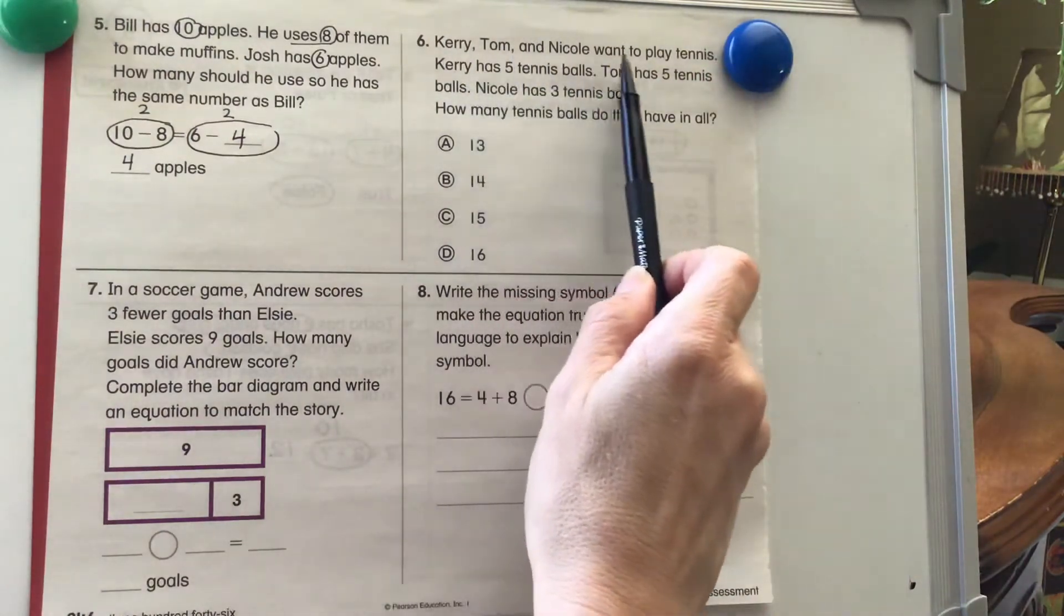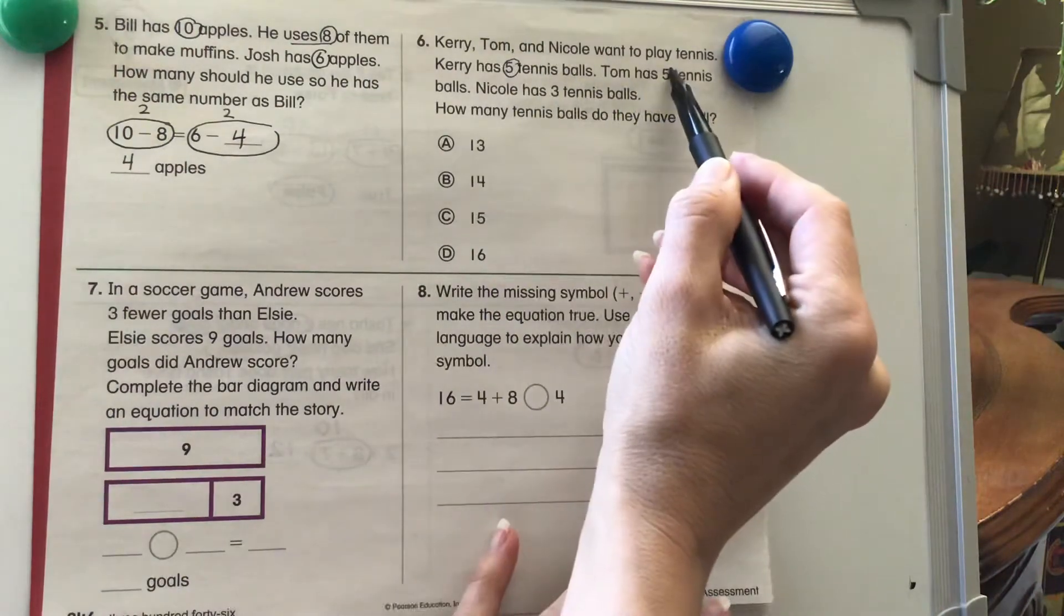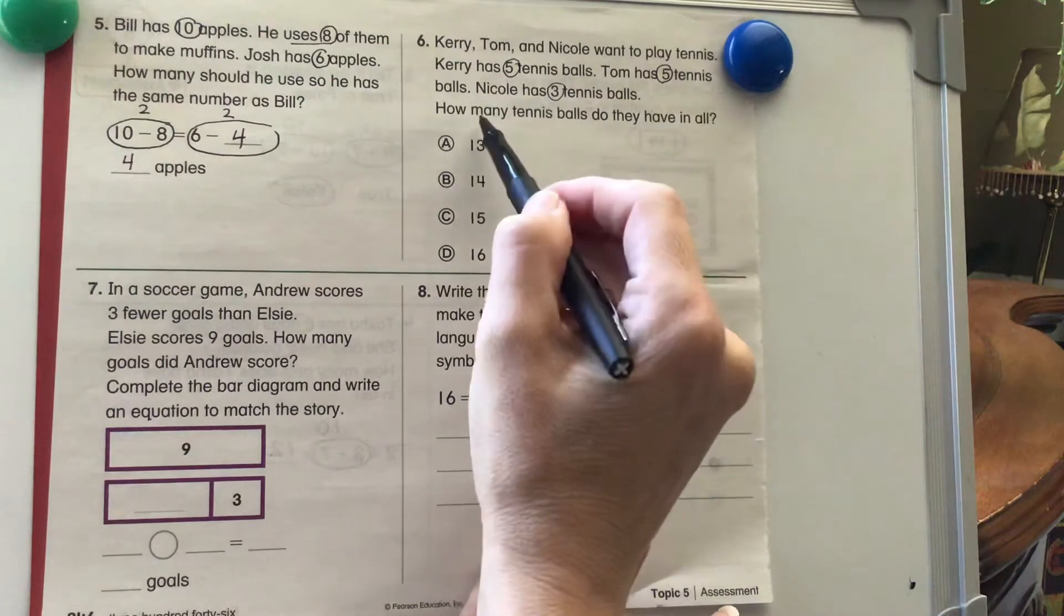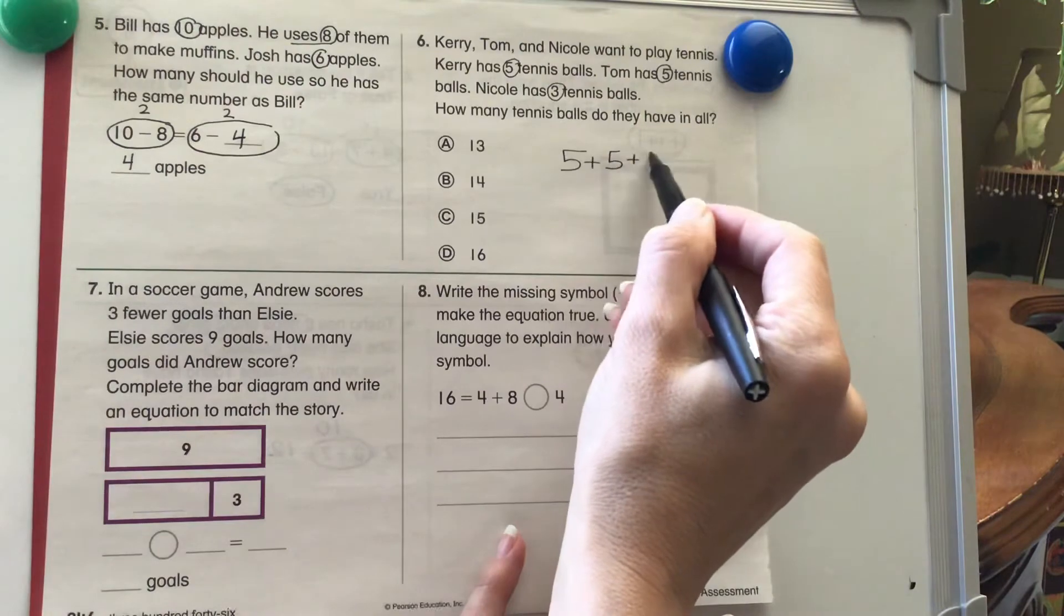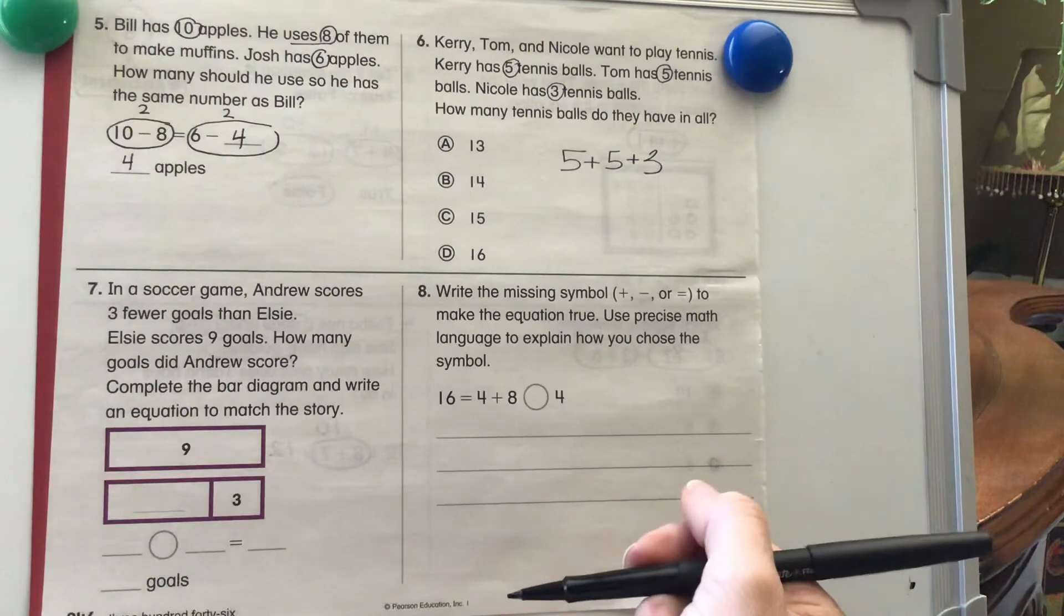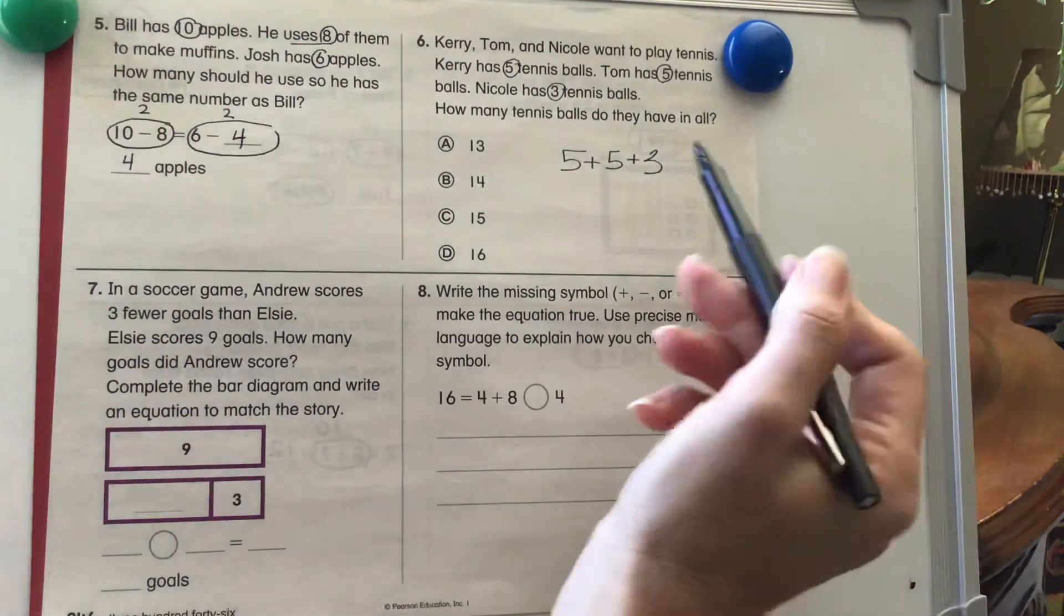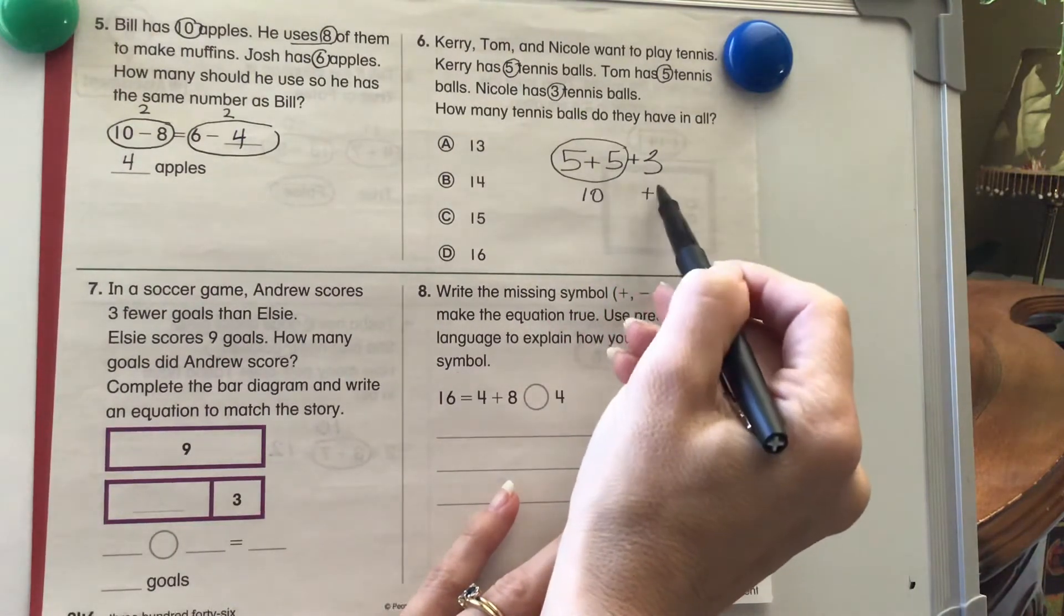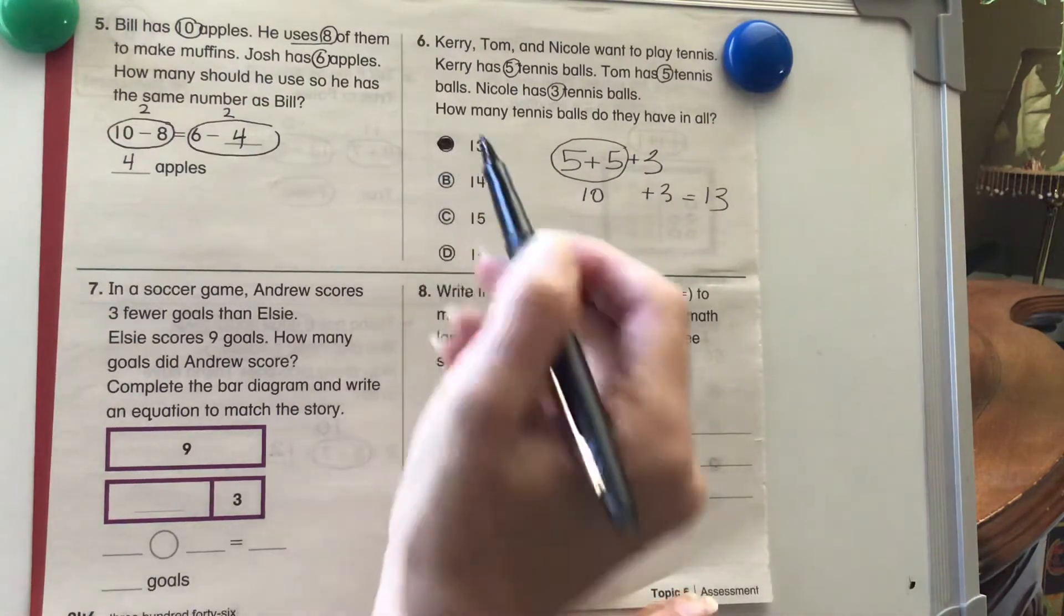Carrie, Tom, and Nicole want to play tennis. Carrie has 5 tennis balls. Tom has 5 tennis balls. And Nicole has 3 tennis balls. How many tennis balls do they have in all? So we have 5 plus 5 plus 3. Go ahead and pause the video, choose your correct answer. I'm going to make a 10 with this one. I know that 5 plus 5 equals 10 and 10 plus 3 equals 13. So I know my answer is going to be A, 13.